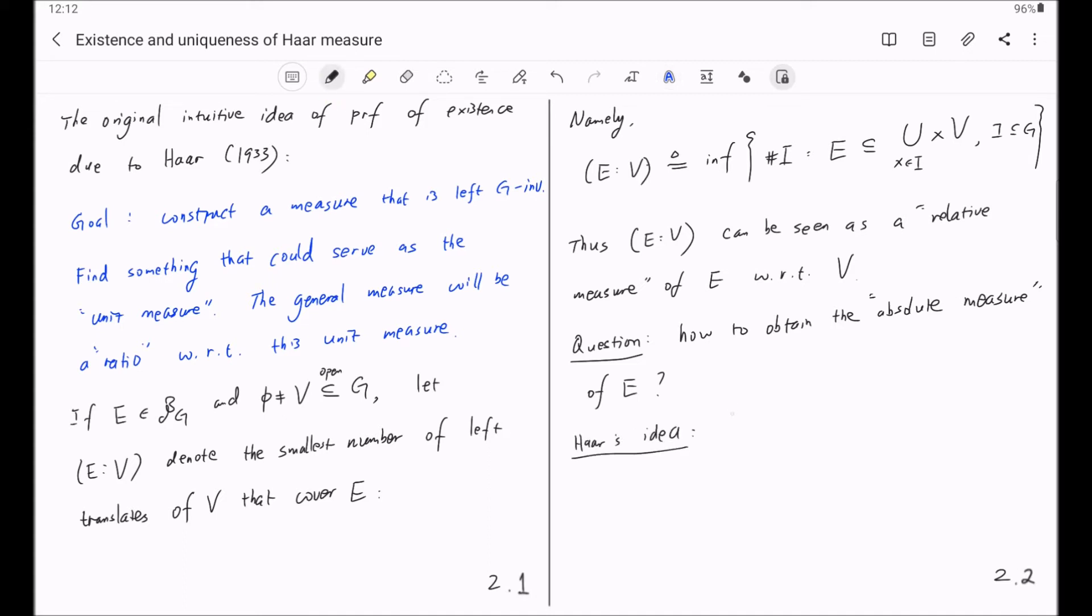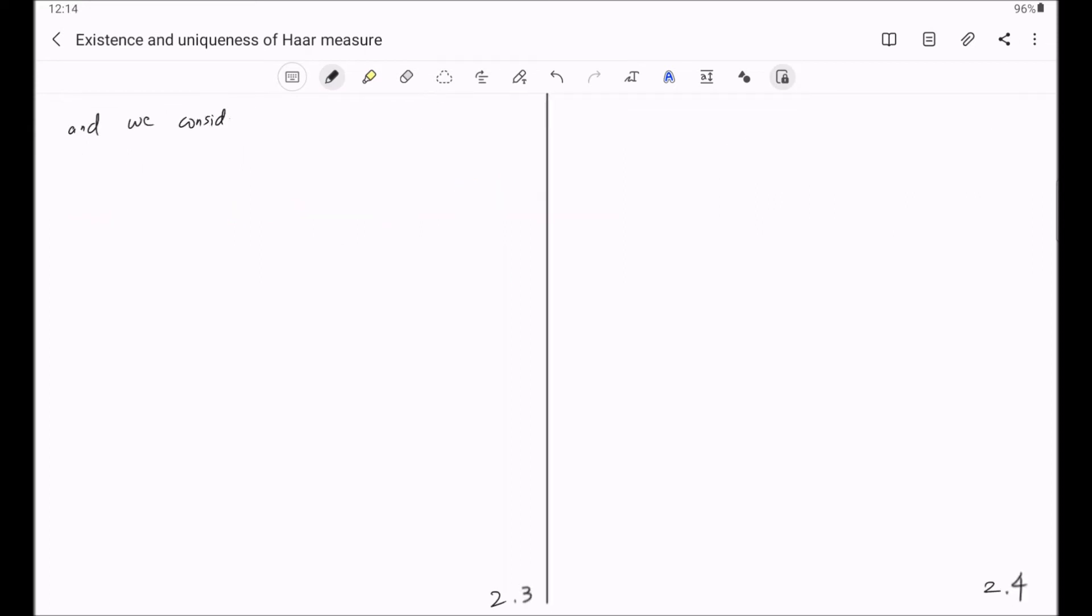To obtain this absolute measure, Haar's idea was the following. First, we fix a precompact open subset E0, whose measure we consider as unity. And we consider the ratio (E:V)/(E0:V) as an approximate of the absolute measure of E.